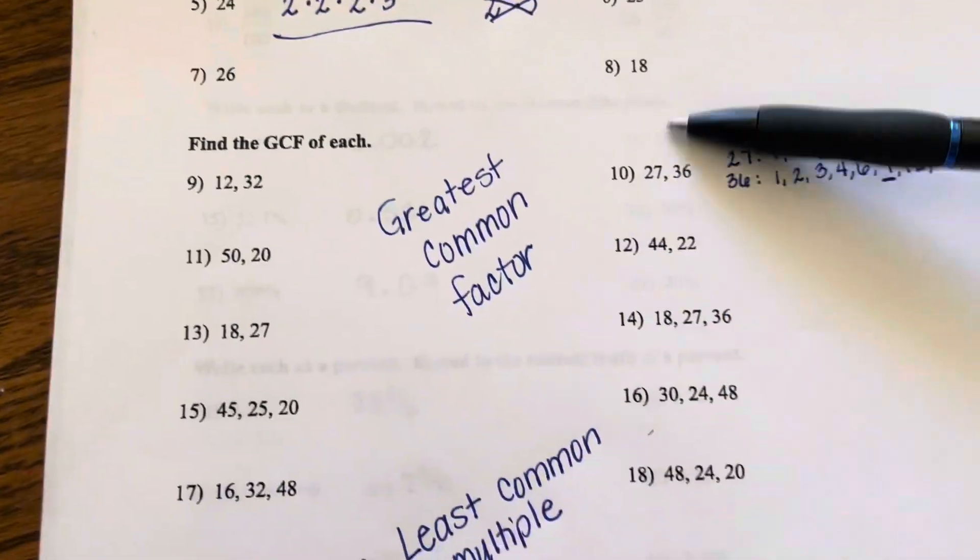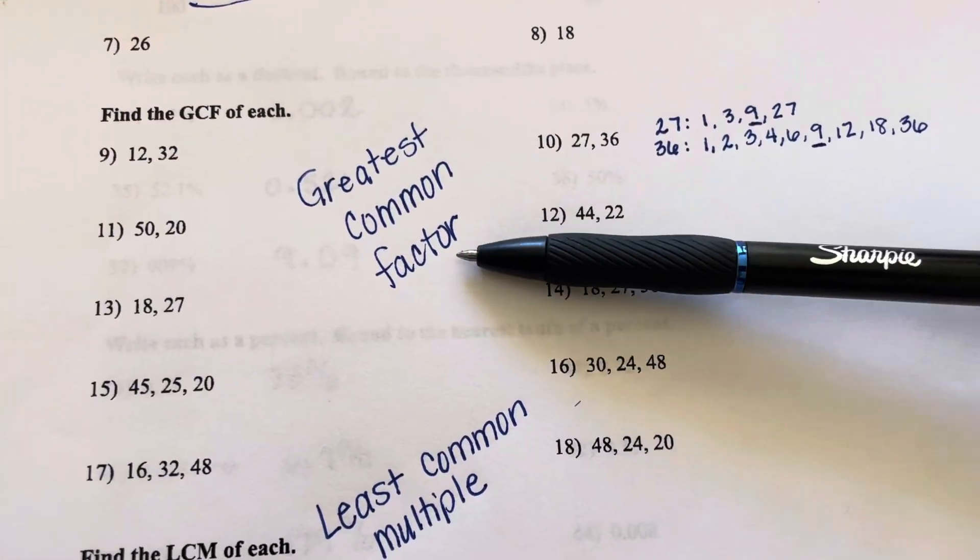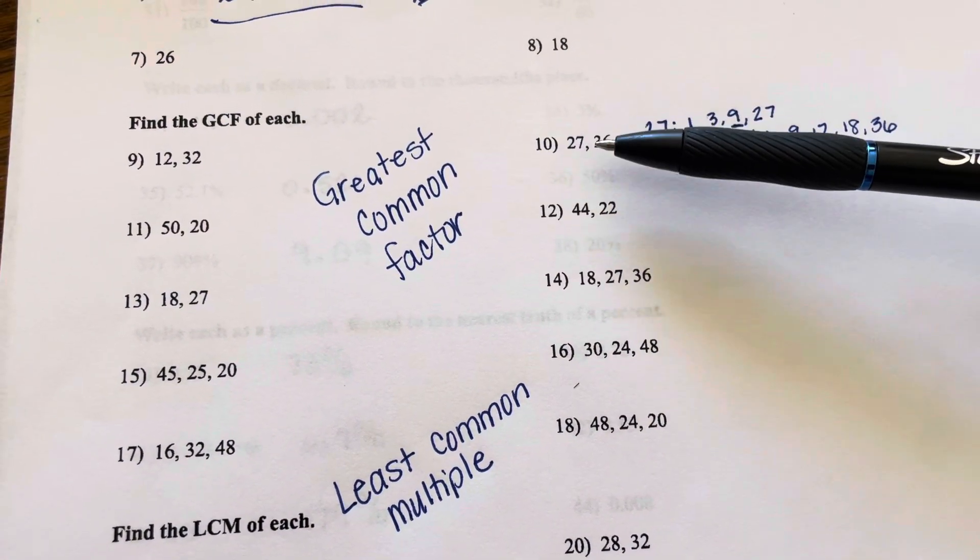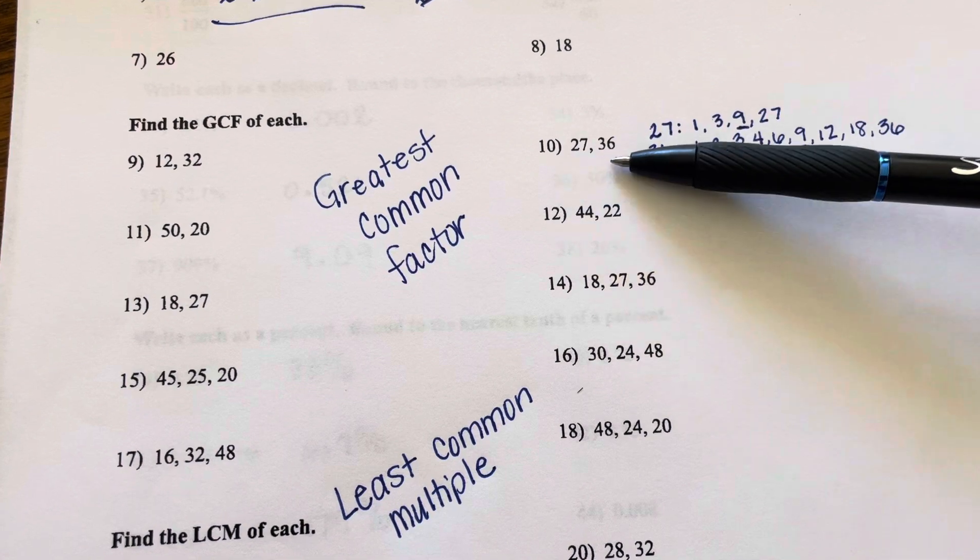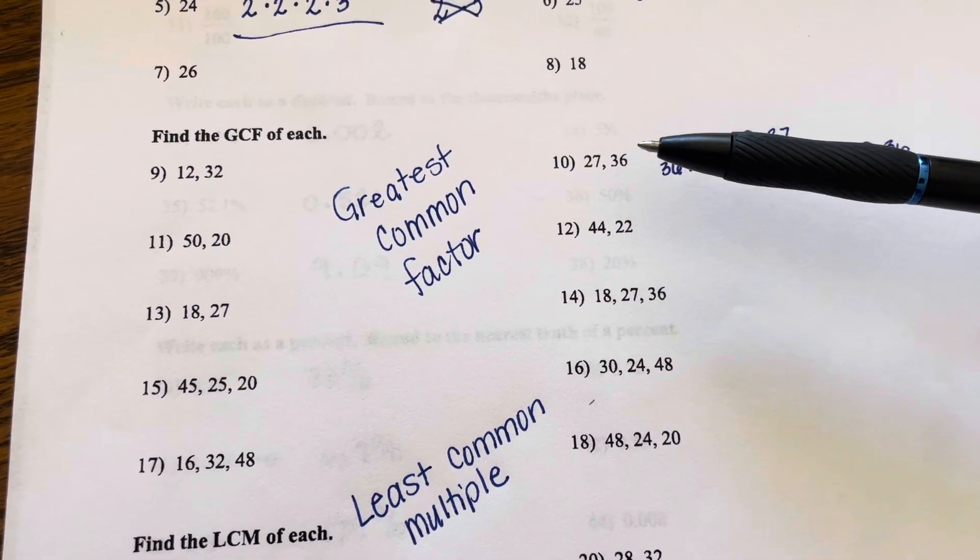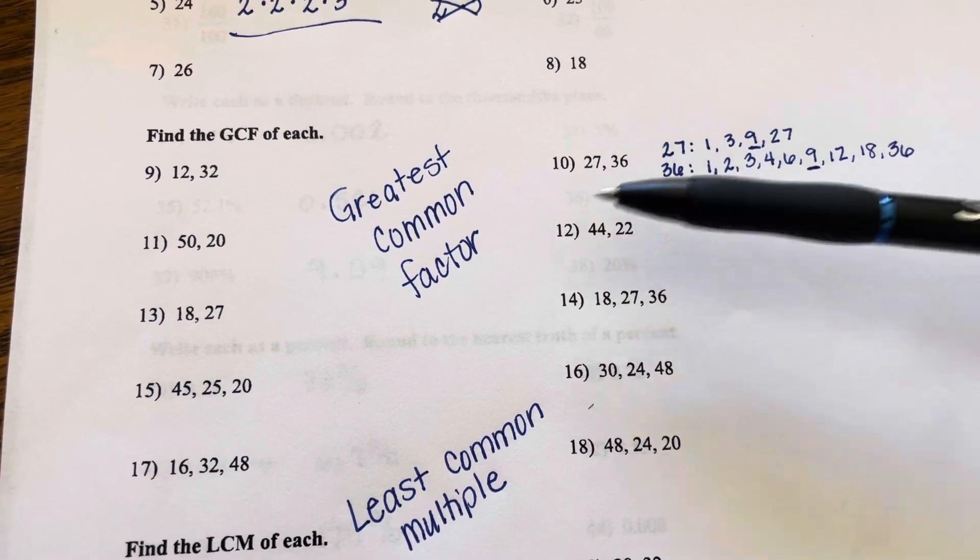So, let's look at greatest common factor. Greatest common factor means we're going to look at the factors that play into both of these numbers, and we're going to find which one is the greatest that they share.